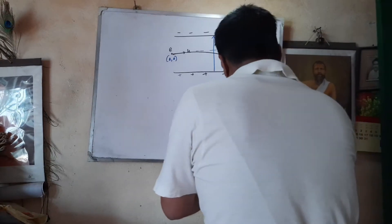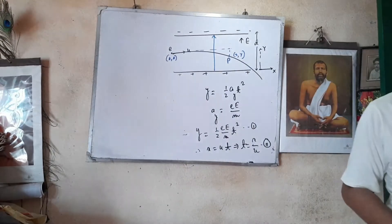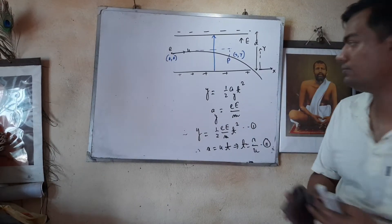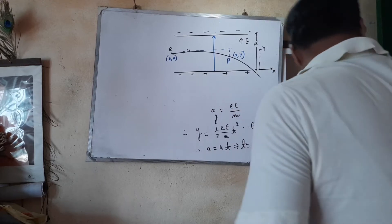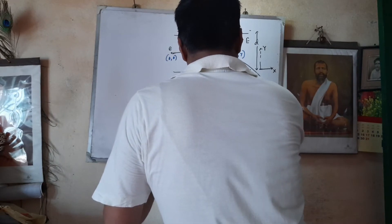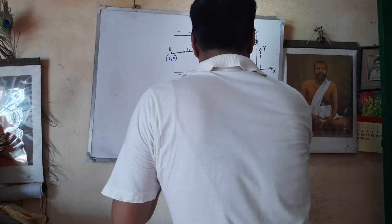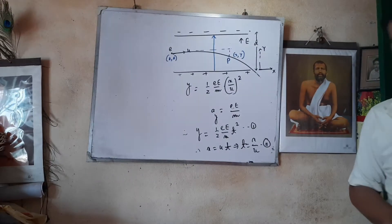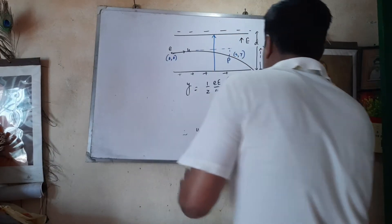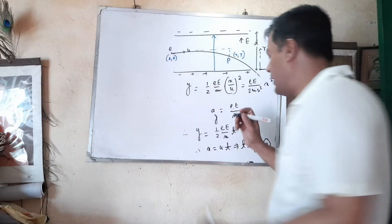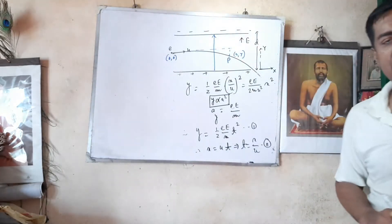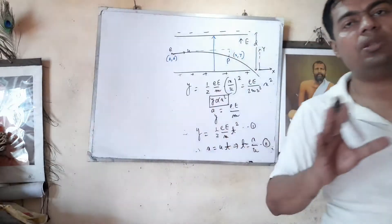Substituting t = x/u into the equation for y, we get y = ½ · (eE/m) · (x/u)² = (eE)/(2mu²) · x². This is clearly the equation of a parabola — y proportional to x² — so the trajectory of the projected electron is a parabola under these conditions.